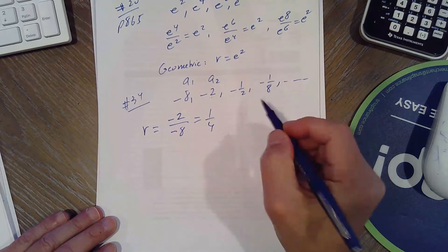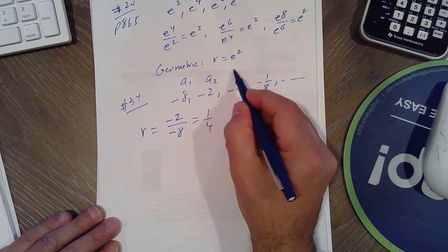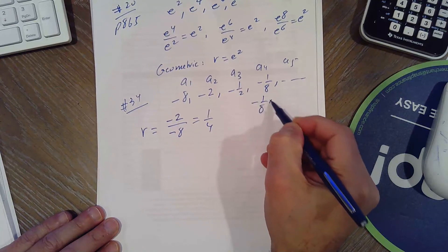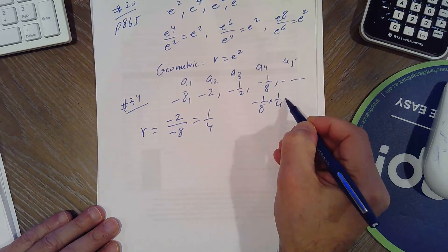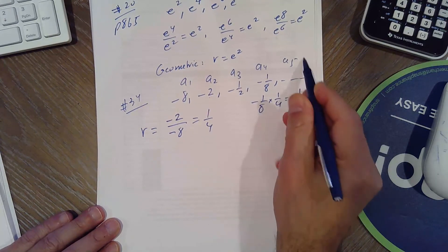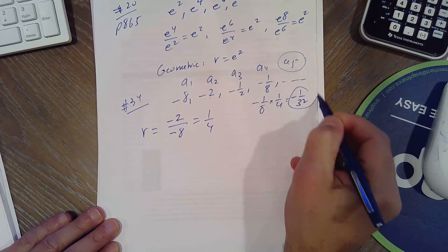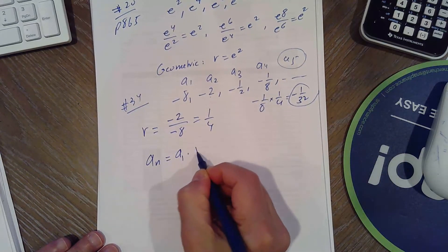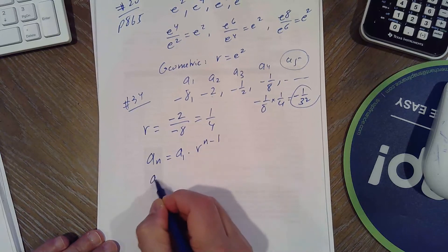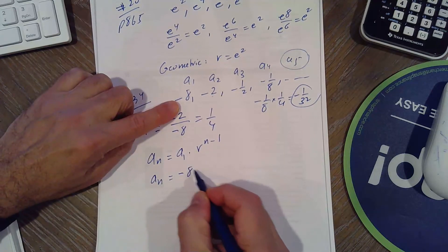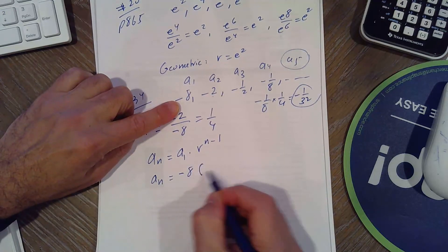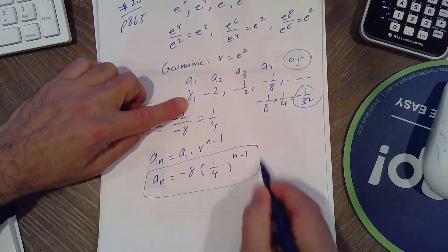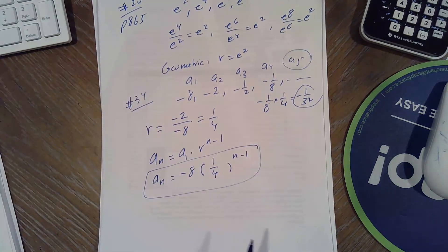For the given sequence we already know it's geometric, so we just compute a₂/a₁ to get the common ratio. To get the fifth term, take the fourth term, which is -1/8, and multiply by r = -1/4, giving the fifth term. For the nth term, use the formula: aₙ = a₁·rⁿ⁻¹, where a₁ = -8 and r = 1/4.